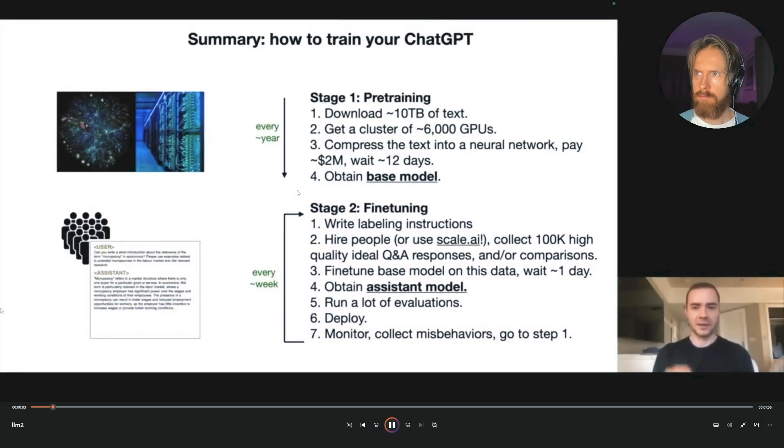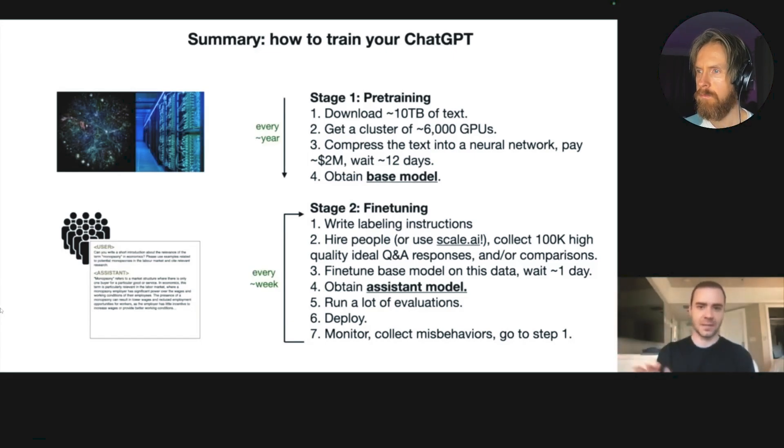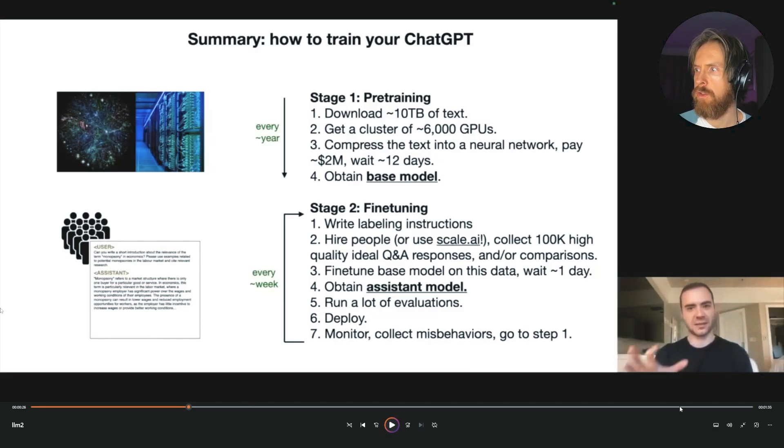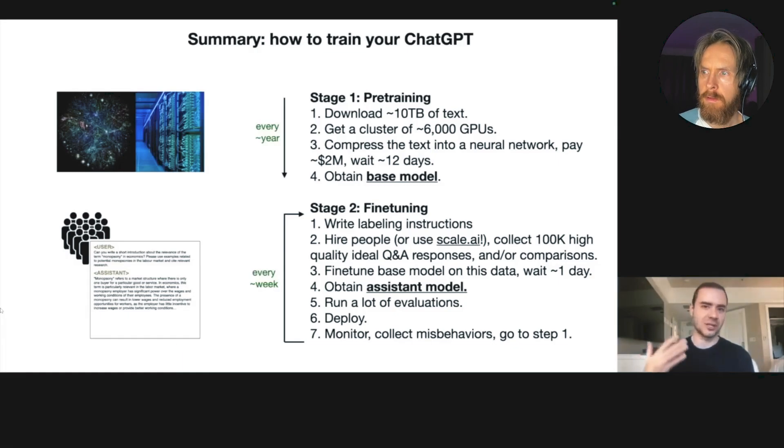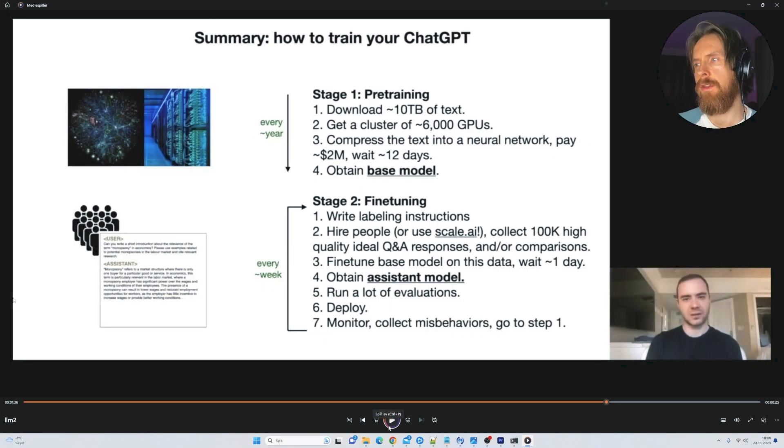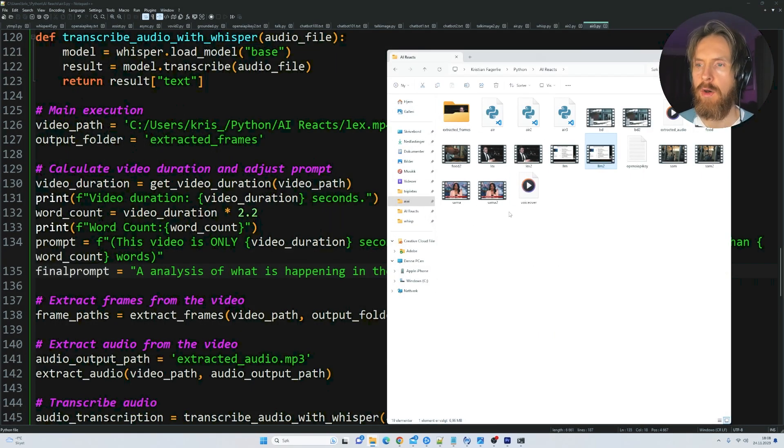In this video presentation the speaker is explaining the two primary stages involved in training a language model like ChatGPT which involves significant computational resources and expertise. In the stage one pre-training process vast amounts of textual data are obtained from the internet and processed using a cluster of highly specialized and expensive GPUs designed for parallel processing. Any misbehavior identified in the AI's responses is corrected by reviewing the interaction and having a human provide the correct answer. This new corrected dialogue is then fed back into the training data to help the model learn from its mistake. I think this was very good.